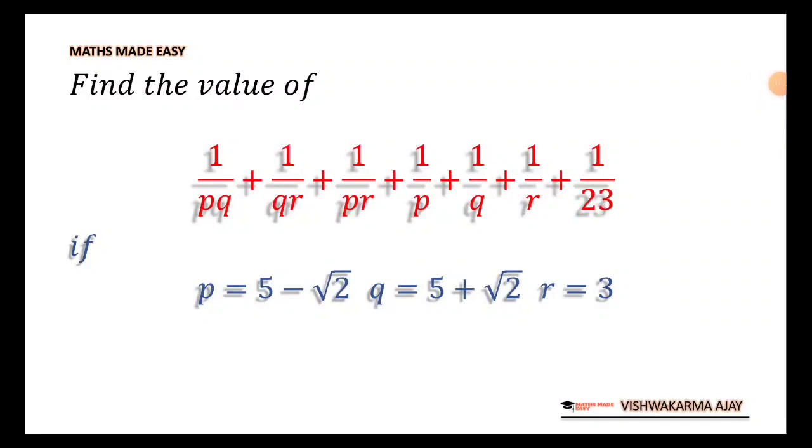Welcome to Maths Made Easy. Today we have another interesting question involving basic mathematics. We know the value of p is equal to 5 minus root 2, the value of q as 5 plus root 2, and r is equal to 3. We need to find the value of this expression.